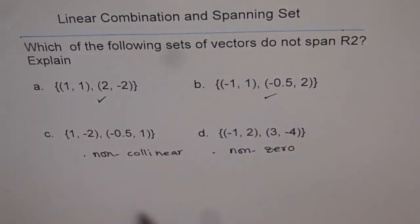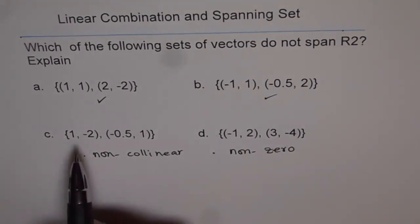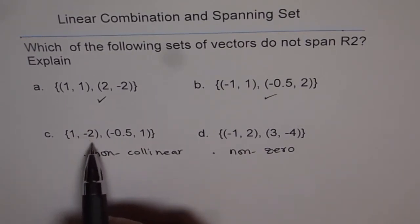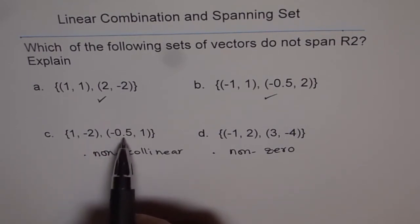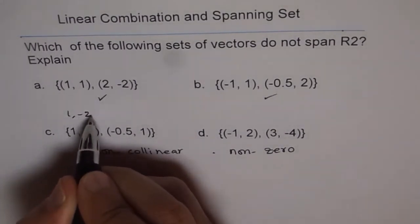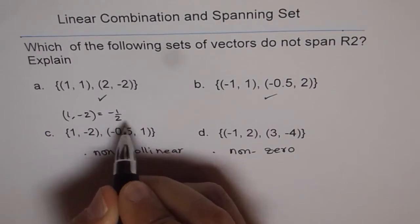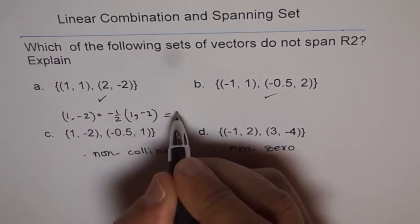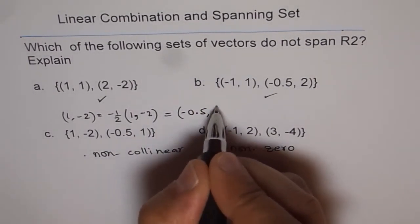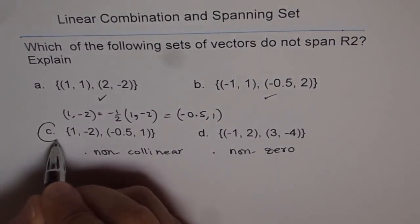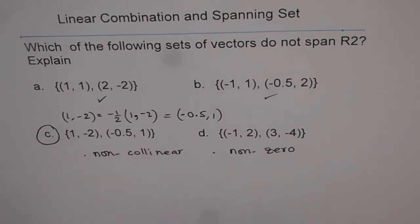For option (c), (1,-2) and (-0.5,1): To get from 1 to -0.5, we multiply by -1/2. So I can write (1,-2) equals -1/2 times (-0.5,1). If I do that, I get (-0.5,1). This means they are collinear. Since we have a set of collinear vectors, they cannot span R2. So this set is collinear and cannot span R2.